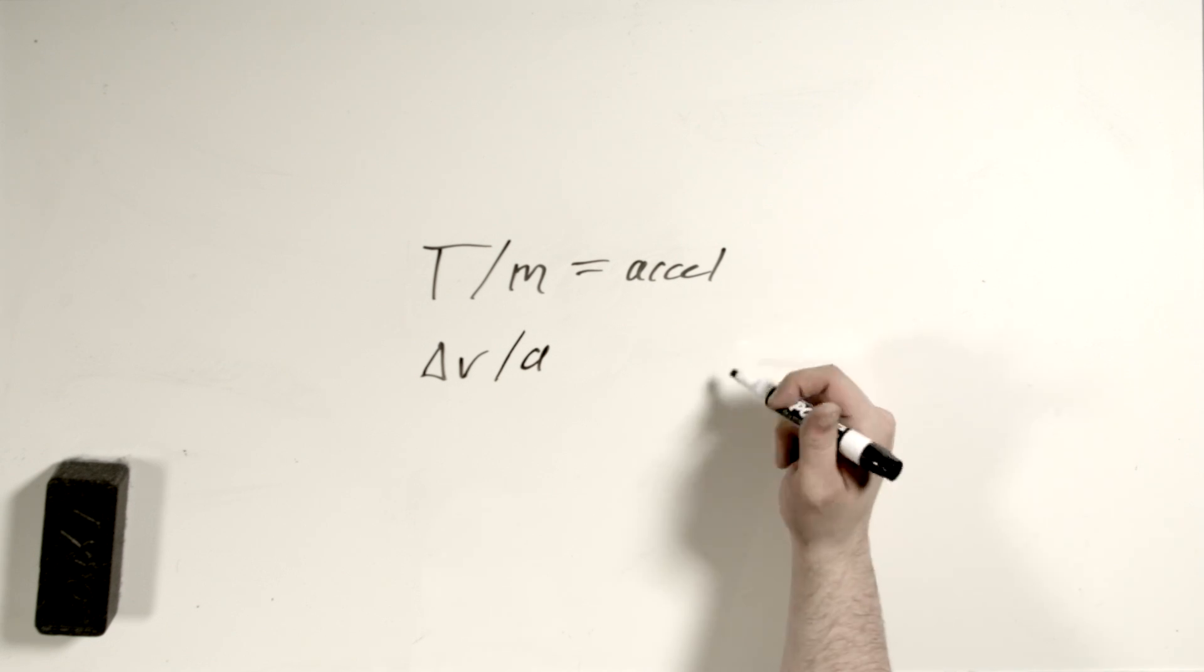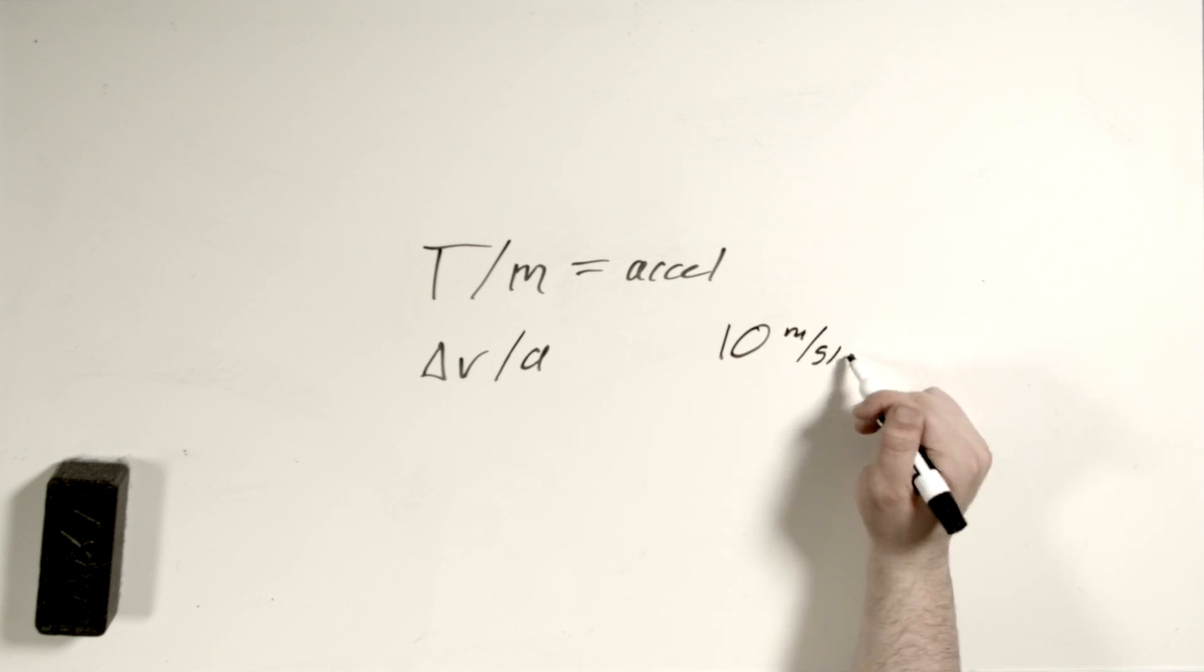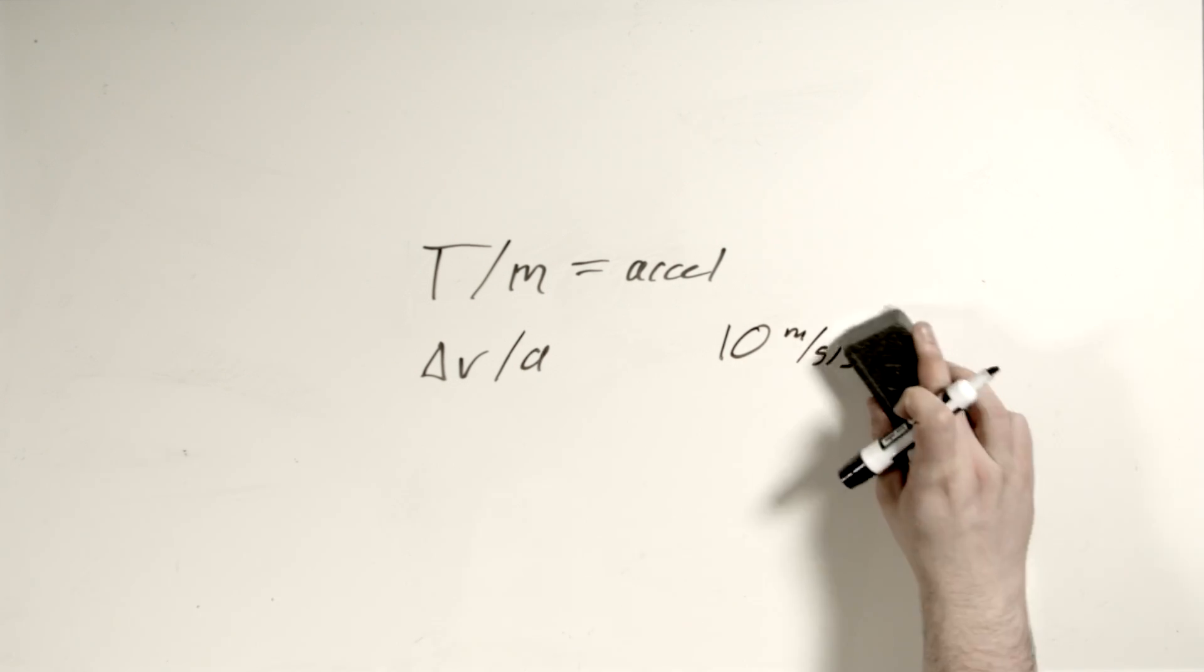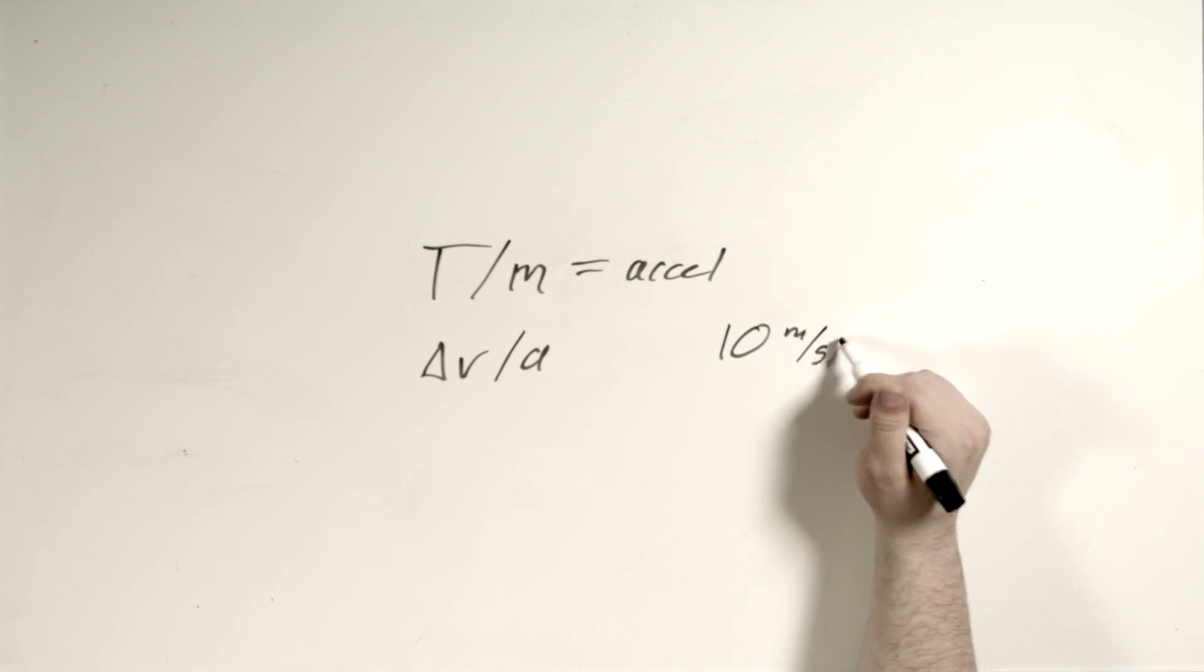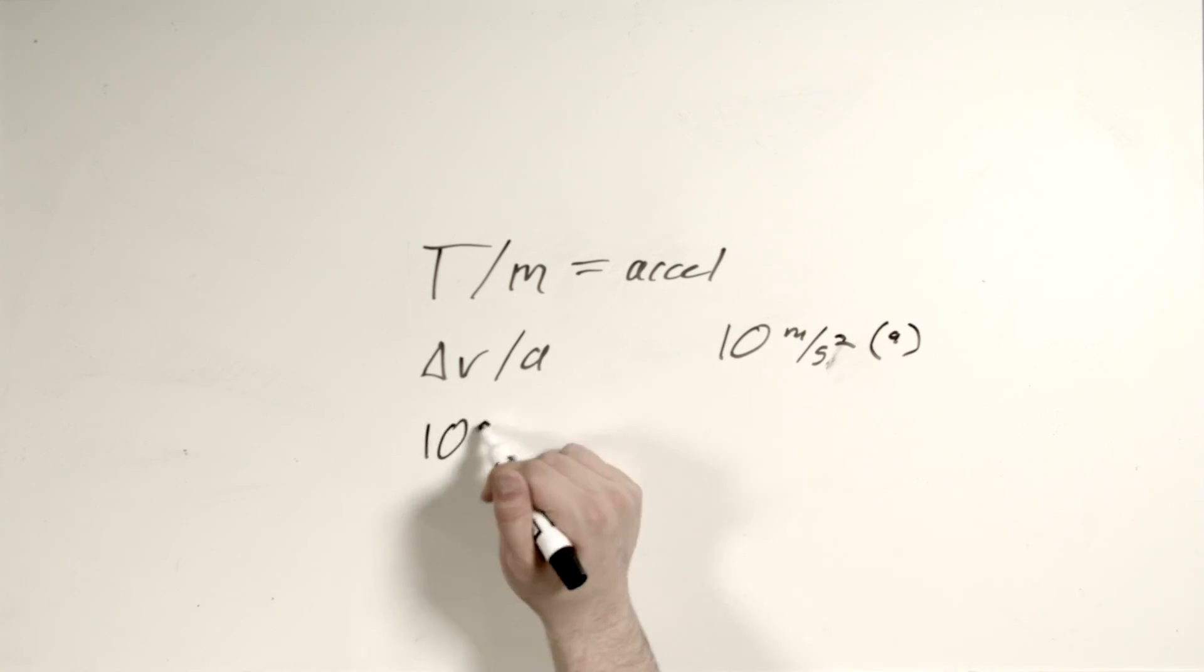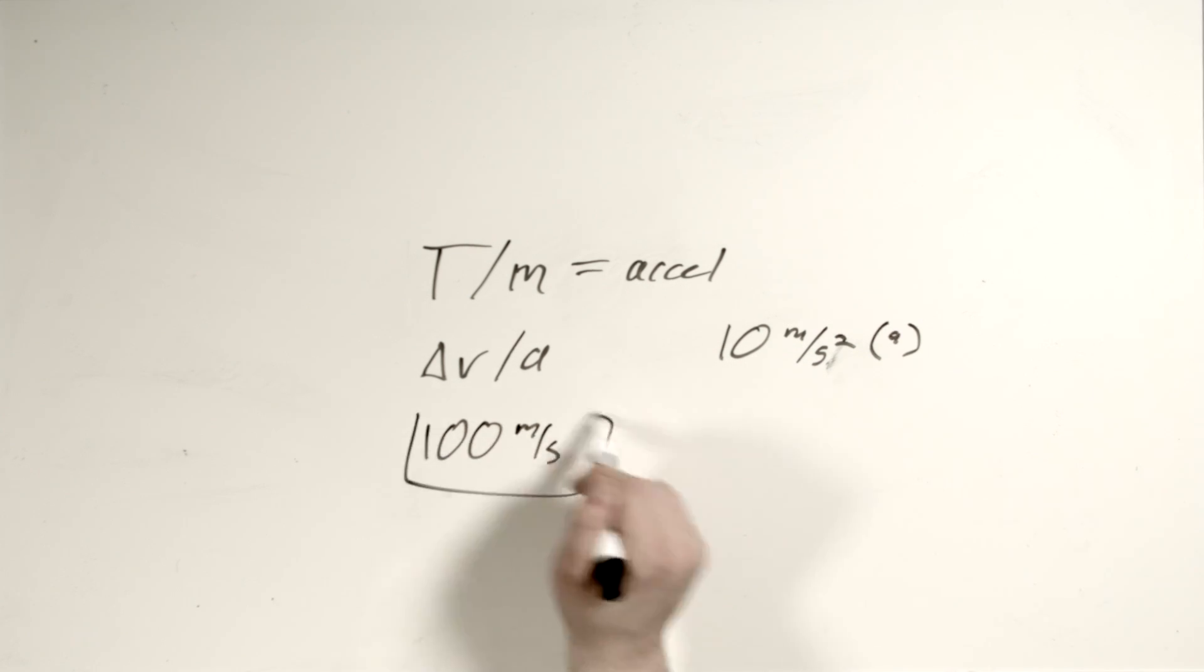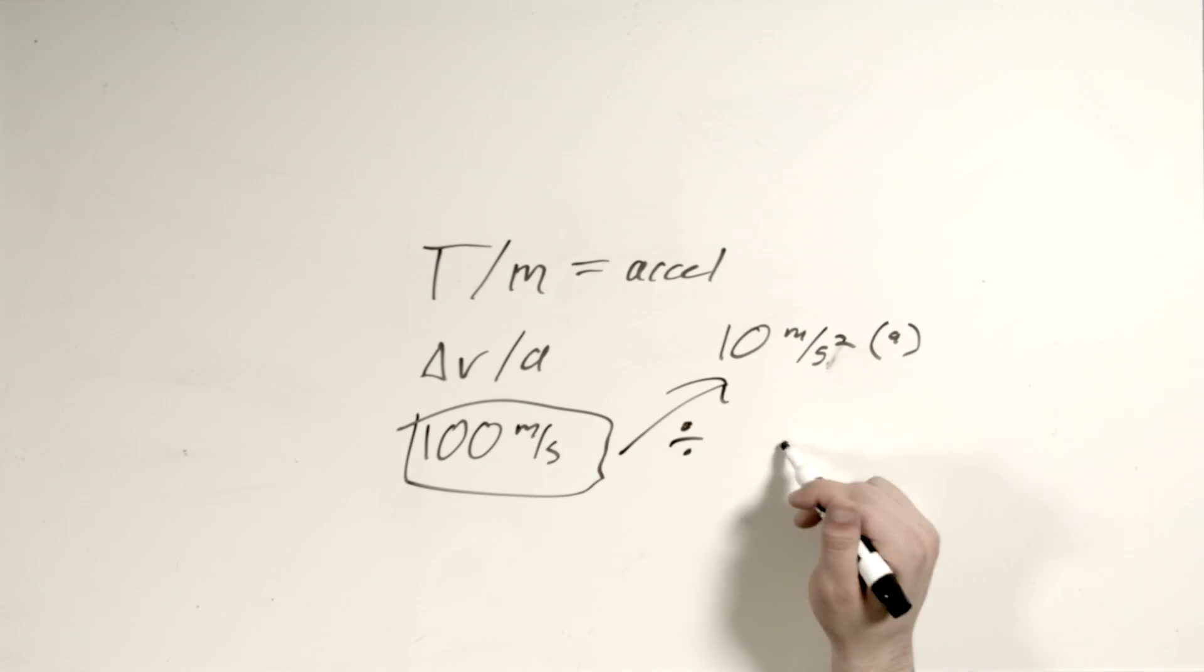If we assume that we're going to accelerate at 10 meters per second per second, or per second squared, and we want to burn until we are going 100 meters per second faster than we were, then this is going to take us 10 seconds. We take our total change in velocity, divide it by this, and we get 10 seconds. 100 divided by 10, 10 seconds. Perfect, absolutely perfect, correct?